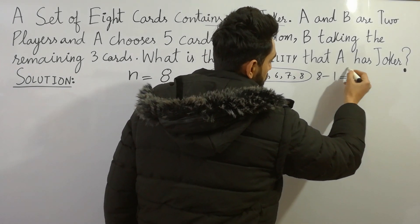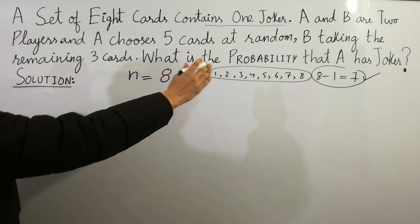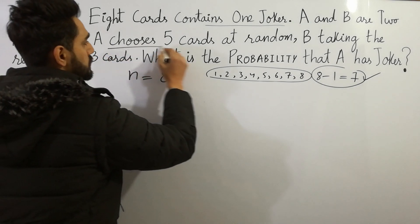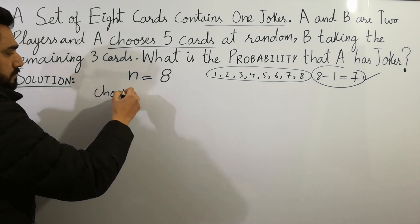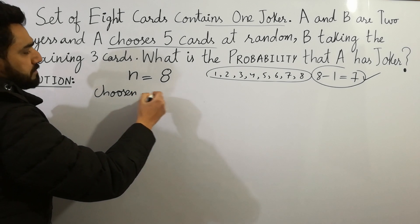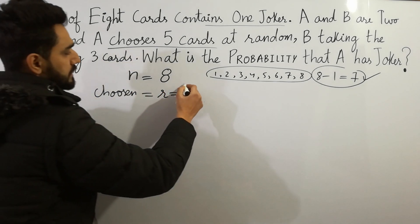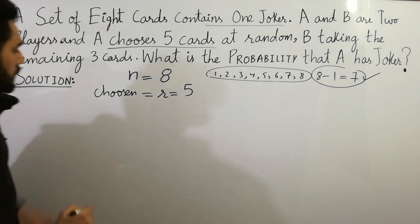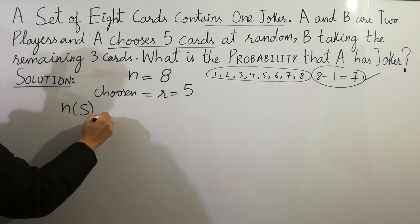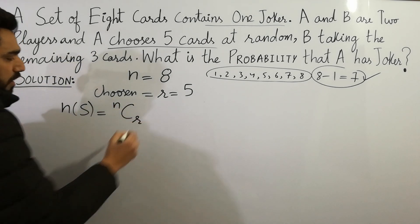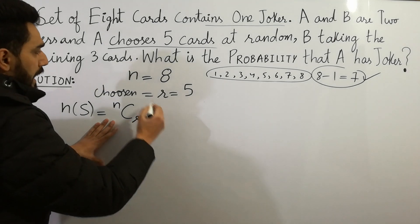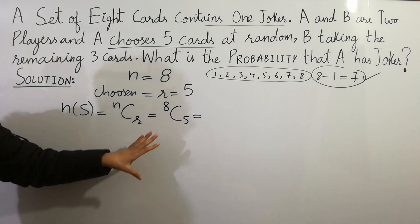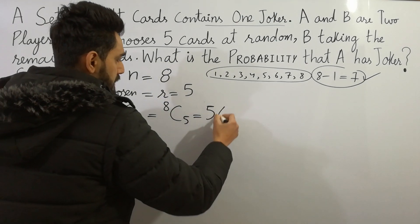A and B are two players, and A chooses five cards. The chosen cards are given here — r is equal to five. Since we have n and r, we will apply the combination formula. The sample space will be equal to nCr. Here n is eight and r, the chosen cards, is five. So 8C5 is equal to 56. This is the total sample space.